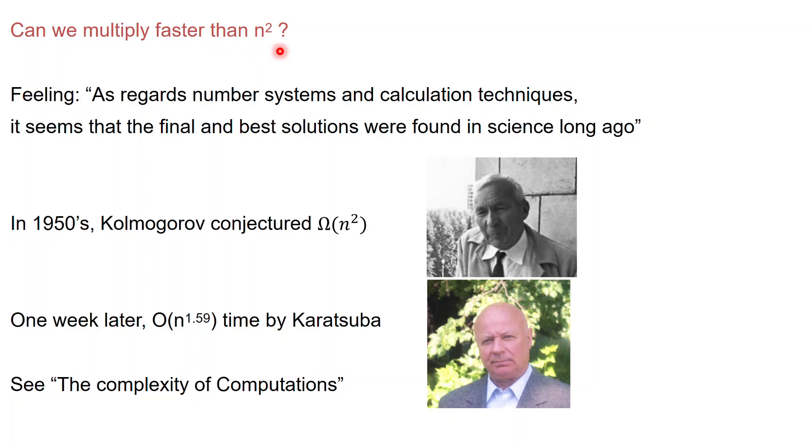And let's pause a second to make a historical remark. Can we multiply faster than n square? The feeling was that, quote, as regards to number systems and calculation techniques, it seems that the final and best solutions were found in science long ago. In other words, hey, look, Babylonians and Egyptians have been multiplying numbers for millennia. If there was a faster way, a better way to multiply, we would have found it by now.